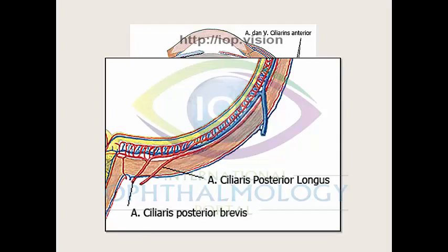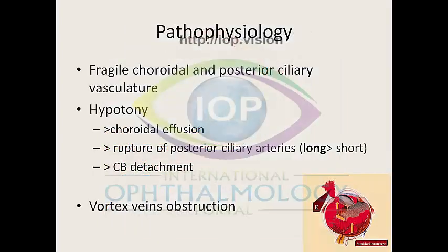It is believed that these vessels are involved in suprachoroidal haemorrhage, particularly the long posterior ciliary artery. The theory is that the choroidal and posterior ciliary arteries of eyes at risk are fragile or sclerotic. Hypotony has long been identified as the main precipitant. It is believed that hypotony causes choroidal effusion, which causes stretching and rupture of the posterior ciliary artery, especially the long posterior ciliary artery.